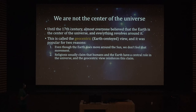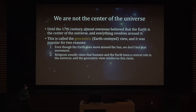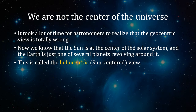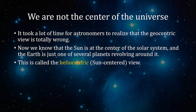The second reason is that religions usually claim humans and the Earth have a central role in the universe, and the geocentric view reinforces this claim. If you believe you are special, you want to believe you are at the center of the universe — not just some planet around some star around some galaxy, one of trillions of galaxies. It took a long time for astronomers to realize the geocentric view is totally wrong. Now we know the Sun is at the center of the solar system, the Earth is just one of several planets revolving around it, and there's nothing really special about it — except that it had the right conditions to develop life.